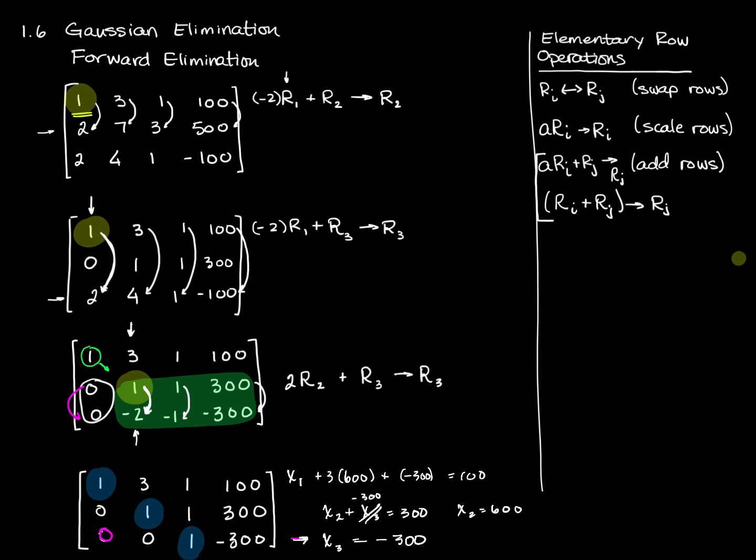But I know x2 equals 600, and x3 equals negative 300, so I can come up with a value for x1 as well. Let's see, that would be x1 plus 18 minus 3 is 1,500. That equals 100. Subtracting 1,500 from both sides gives me x1 equals negative 1,400. So there's my value for x1, there's my value for x2, and there's my value for x3.